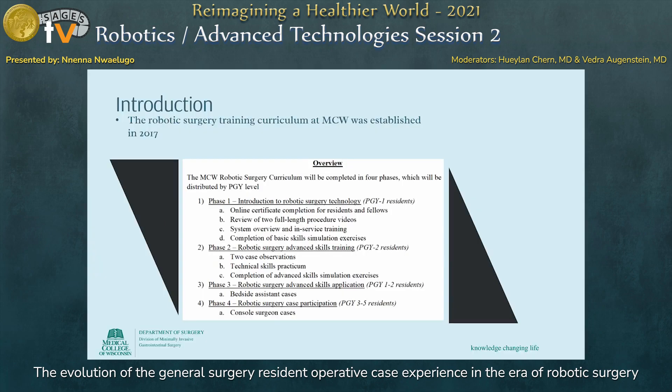The robotic surgery training curriculum at MCW was established in 2017. It consists of four phases, and residents are encouraged to log all operative cases. The first phase focuses on introducing first-year residents to robotic surgery technology through online modules and simulation exercises. In the second phase, second-year residents are exposed to more advanced skills training. Both first- and second-year residents participate in bedside assistant cases as part of phase three, and phase four exposes third- to fifth-year residents to console surgeon cases.